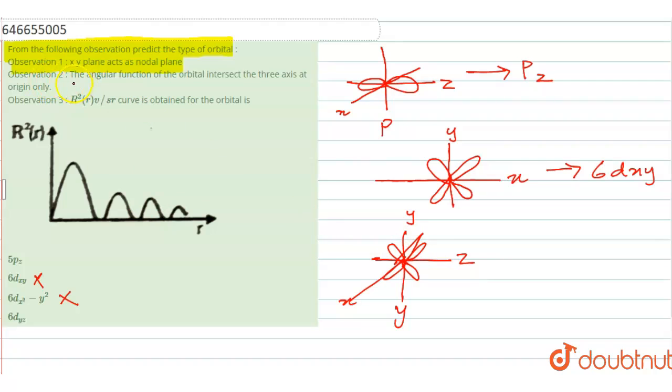Now let us look at observation number two. The angular function of the orbital intersects the three axes at origin only. So it has to intersect at origin. For first option it is clear that it is intersecting only at the origin. This is here.